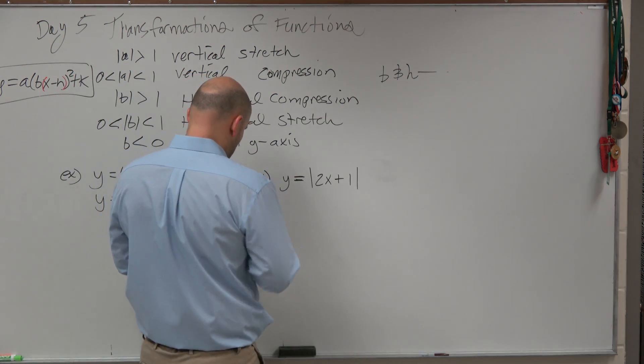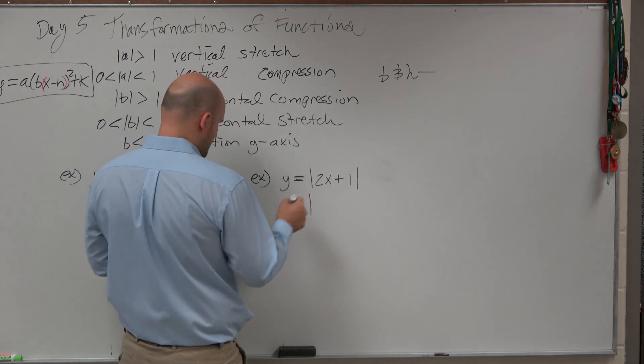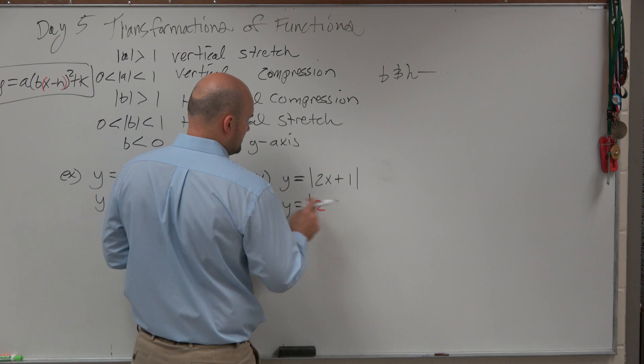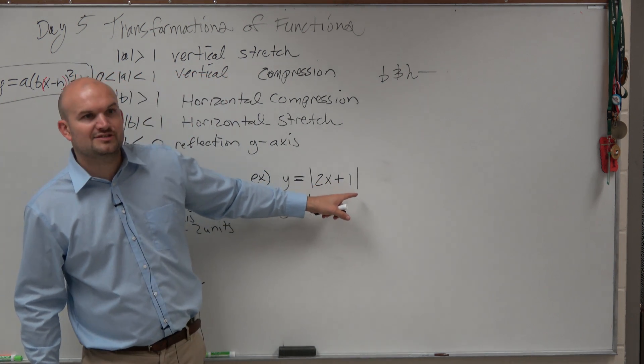Now this one might not be as fun to factor out because you can easily factor out a 2 from 2x. That's just going to leave you with x. But how do you divide out a 2 from 1?